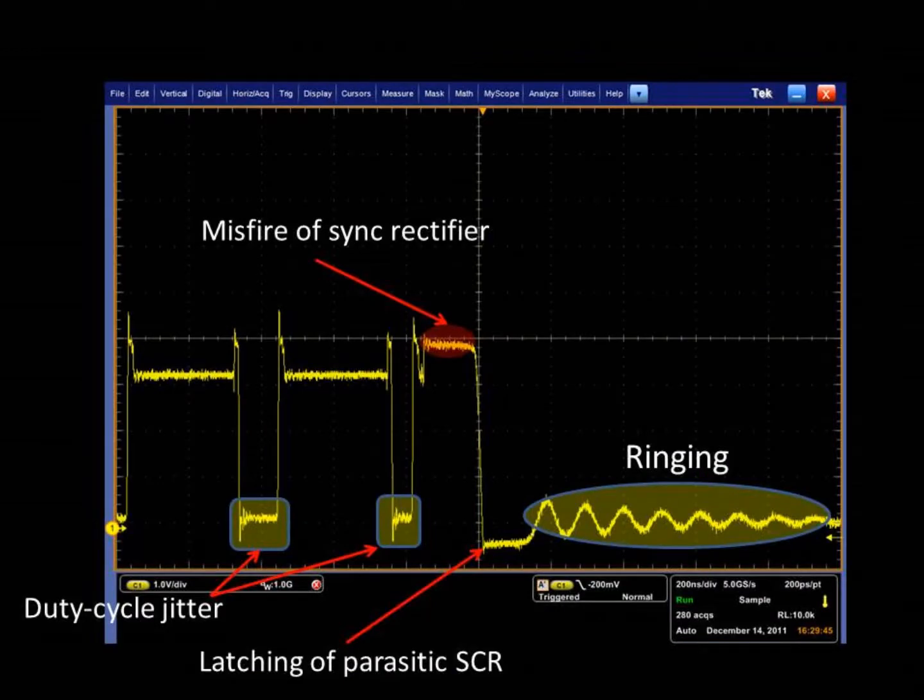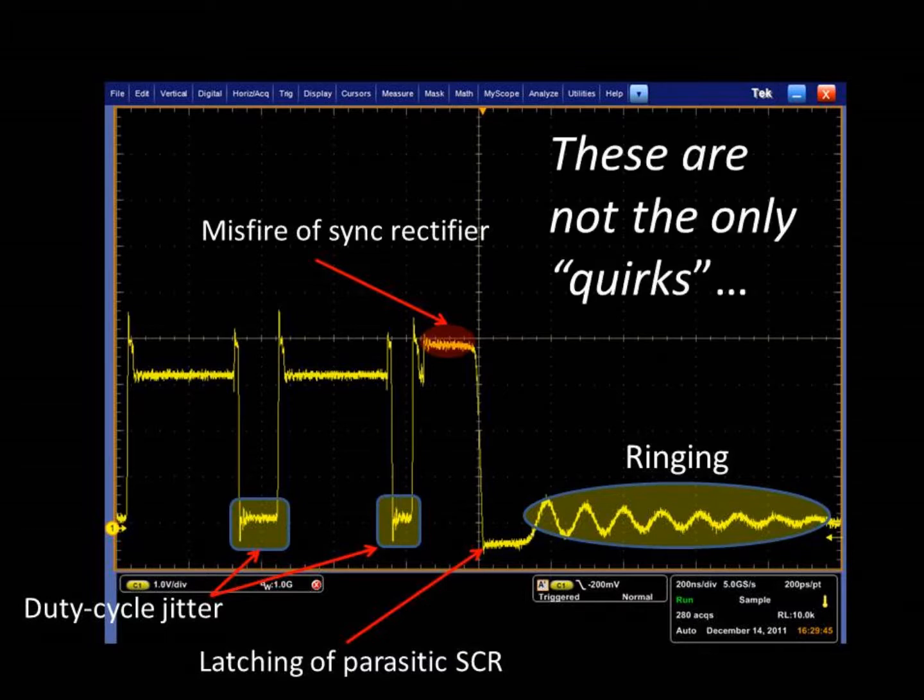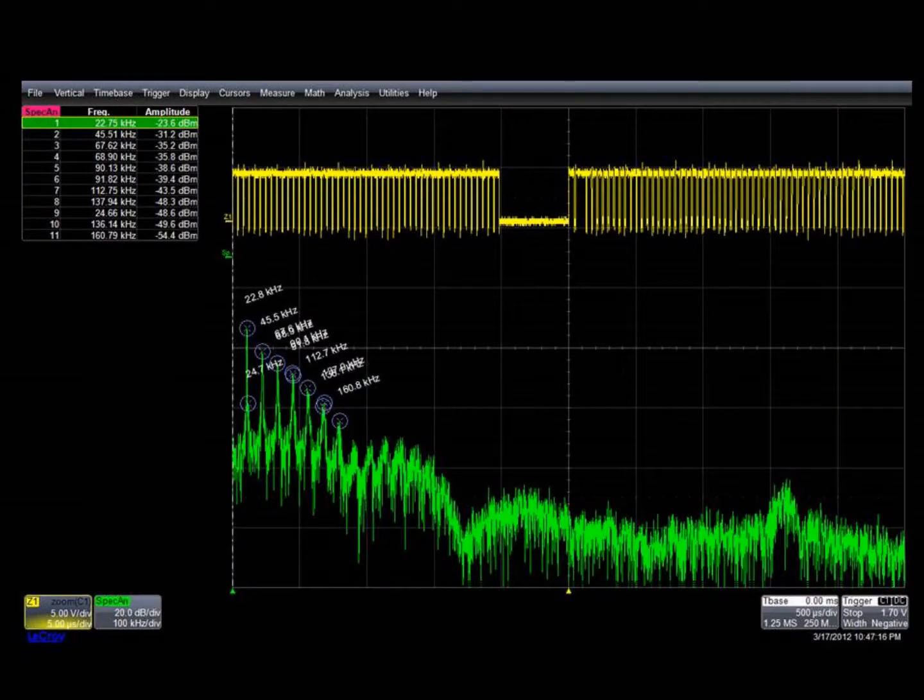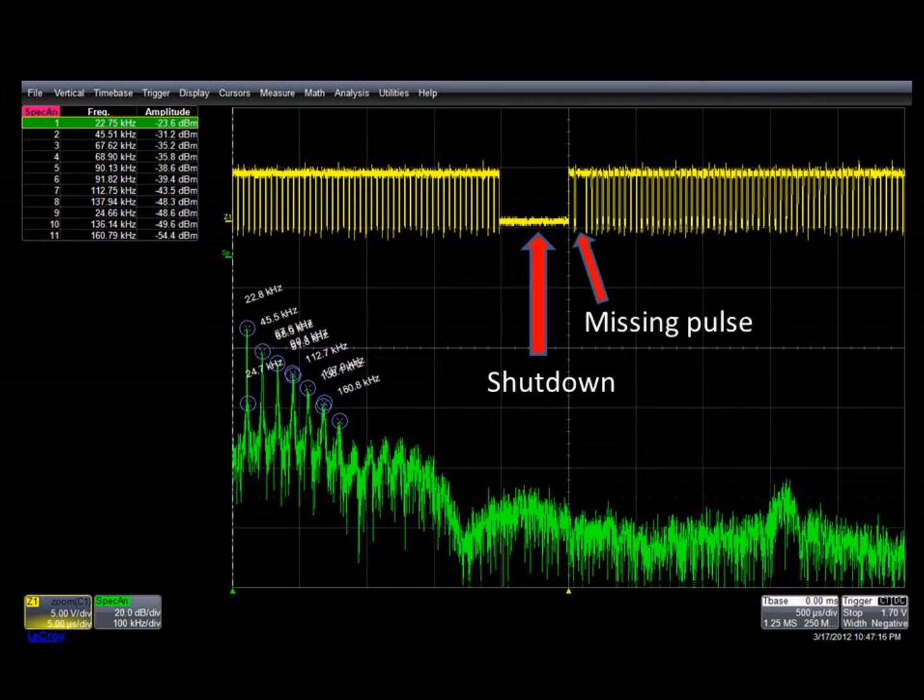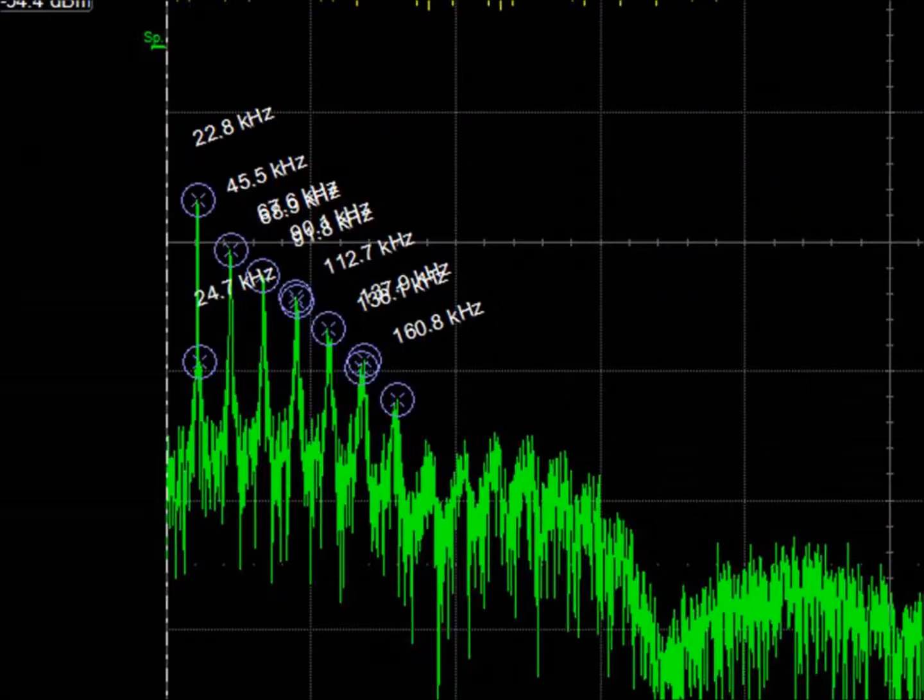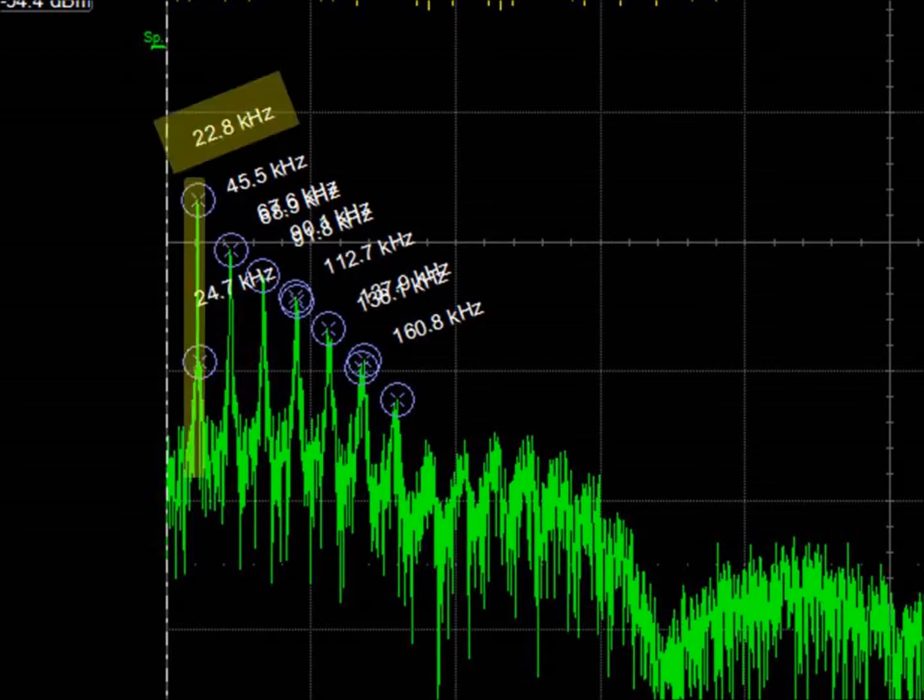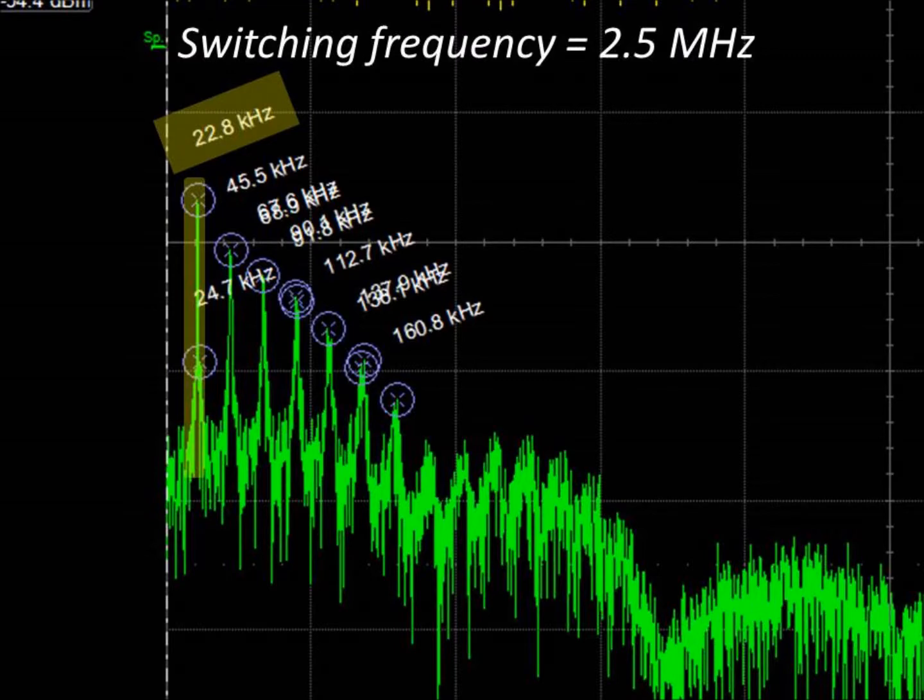If we go back to the synchronous buck regulator with the parasitic SCR tripping, which we discussed in the first measurement example, we can uncover even more quirks in converter operation by looking at the time domain. This image is a zoomed out measurement of the converter's switch node waveform. In this image we can see the shutdown period, and also that there is an additional missing pulse during the recovery period. The impact of these oddities can be seen clearly in the EMI and in the ripple. Both reflect signals predominantly at 23 kHz, despite the 2.5 MHz switching frequency of the converter.